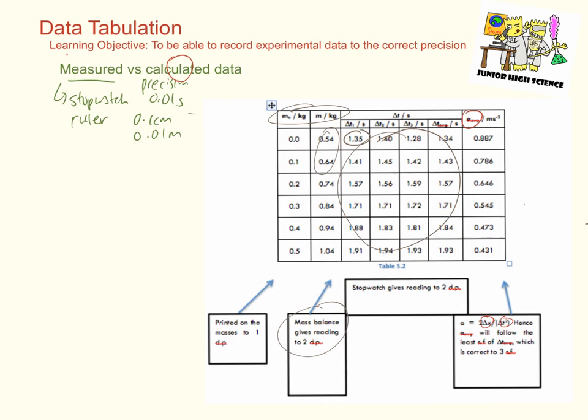Now displacement was measured to three significant figures. It is not shown here, but the data for displacement, according to the precision of the data, gives us three significant figures.